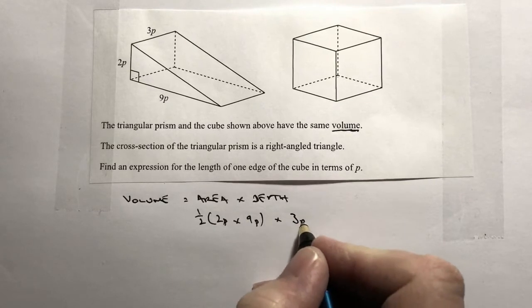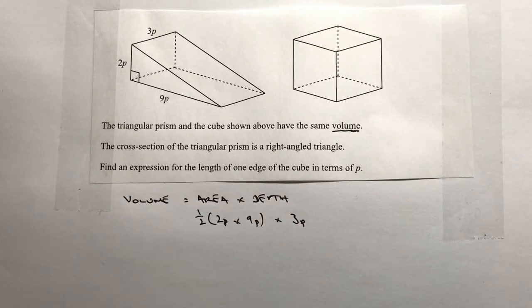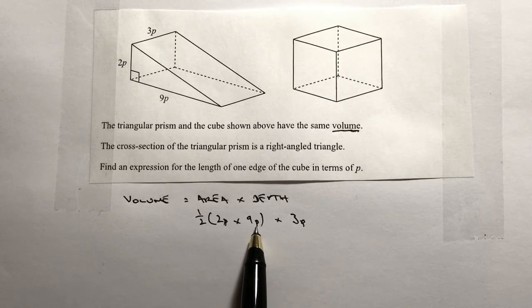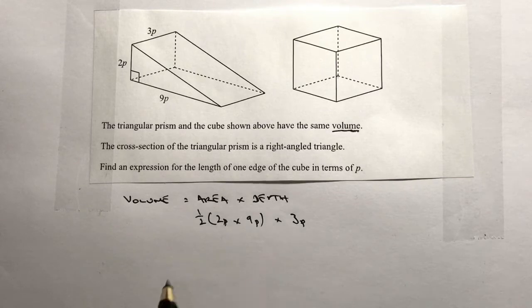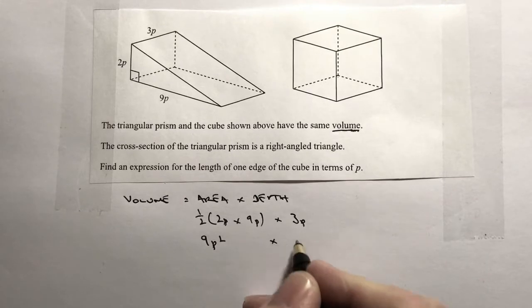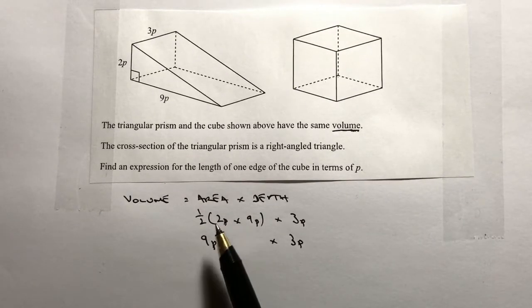If we then start to work all of that out, what we get is 2p times 9p is 18p squared. So this bit in the brackets is 18p squared, and then a half of 18p squared is going to be 9p squared. That's multiplied by 3p.